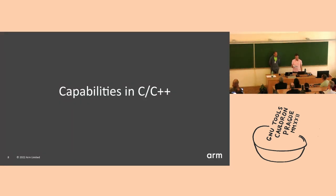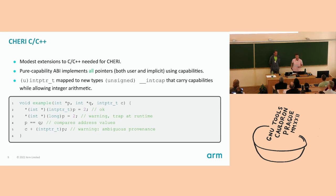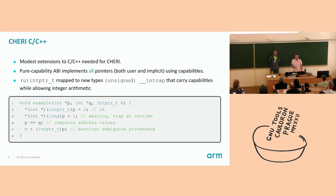Now that we've introduced CHERI and Morello, we can talk about how to take advantage of the architecture from C and C++. To effectively map C and C++ to the architecture, there are some modest language extensions needed. The simplest way to take advantage of the architecture is with the pure capability ABI, where all pointers and references are implemented using capabilities. This includes implied pointers such as the stack pointer and vtable pointers in C++. Arguably the biggest change with CHERI C and C++ is around the uintptr_t type, which has to be able to carry pointers and therefore capabilities.